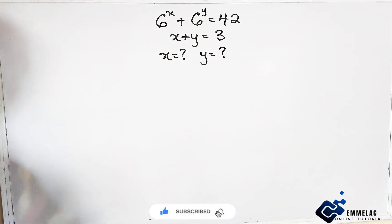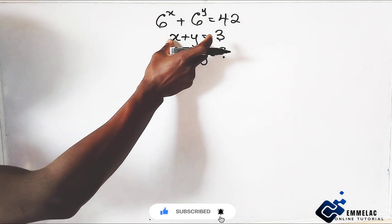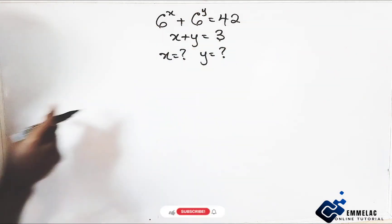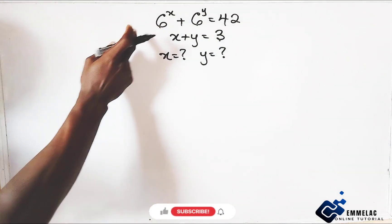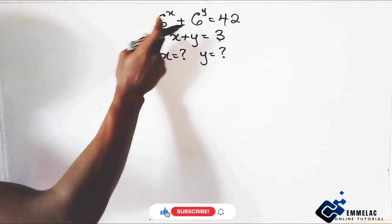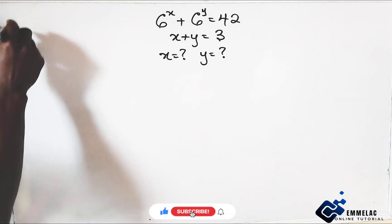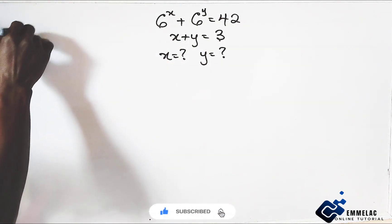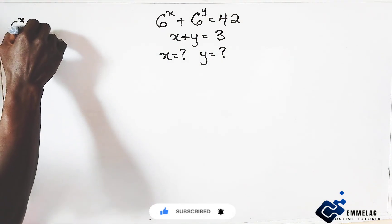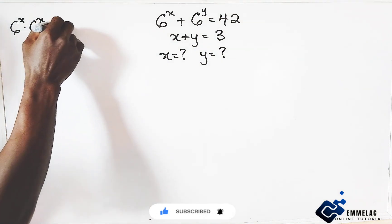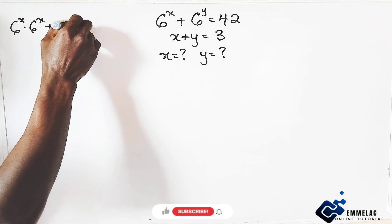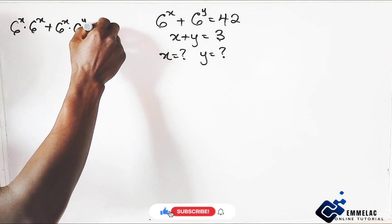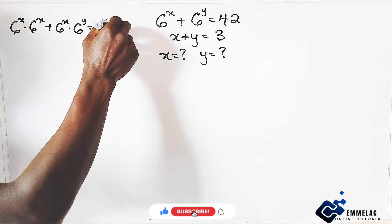To solve this, let us find a way to generate x plus y in this expression. We will multiply through by 6 raised to the power of x. So 6 raised to the power of x times 6 raised to the power of x, plus 6 raised to the power of x times 6 raised to the power of y, equals 6 raised to the power of x times 42.